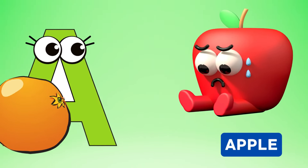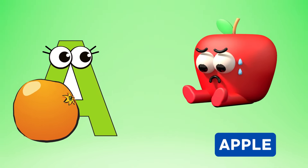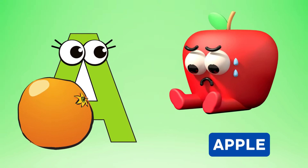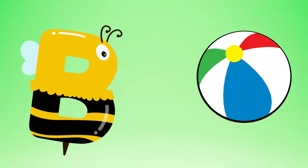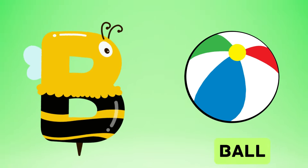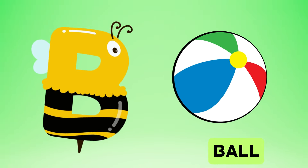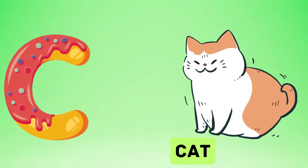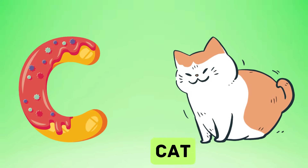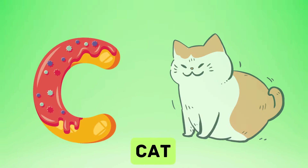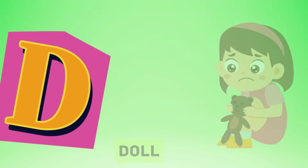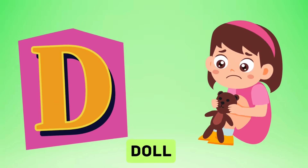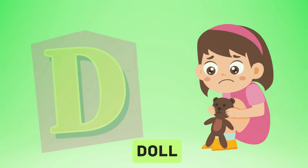A is for apple, a-a-apple. B is for ball, b-b-ball. C is for cat, c-c-cat. D is for doll, d-d-doll.